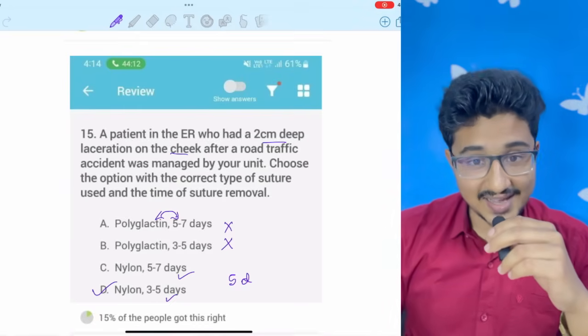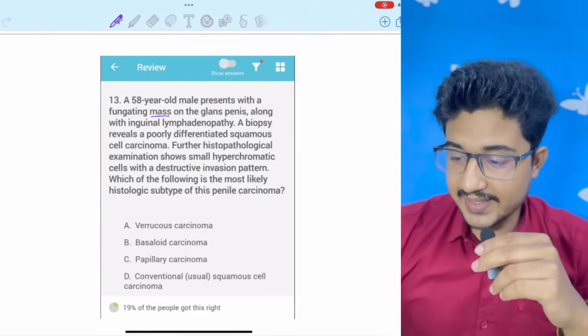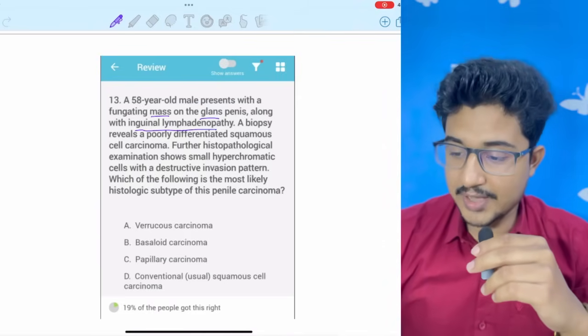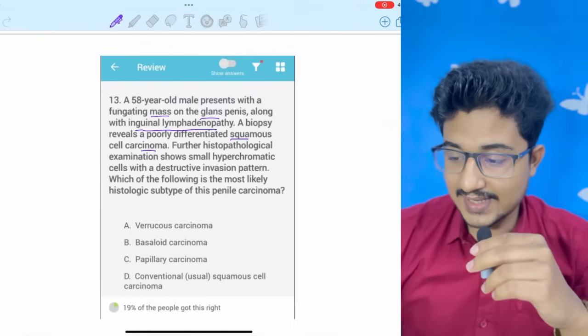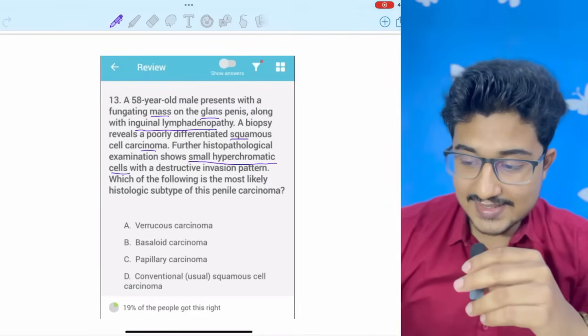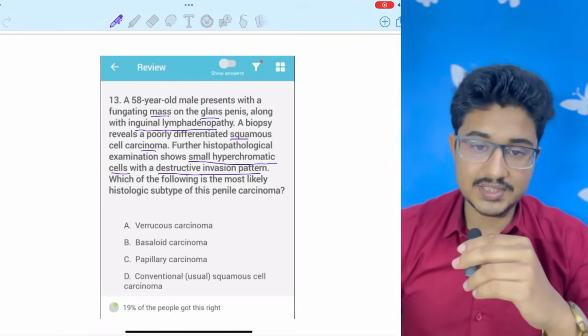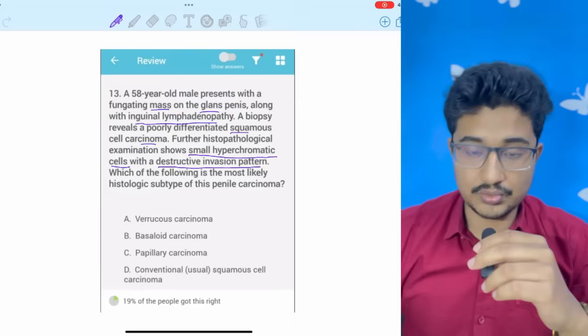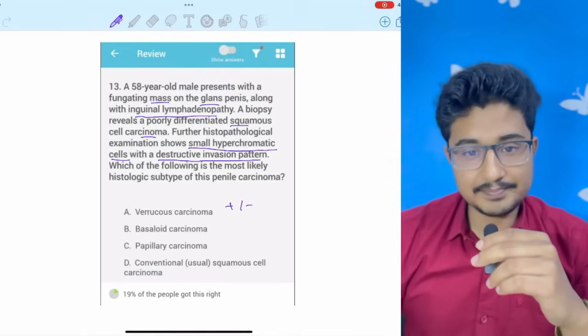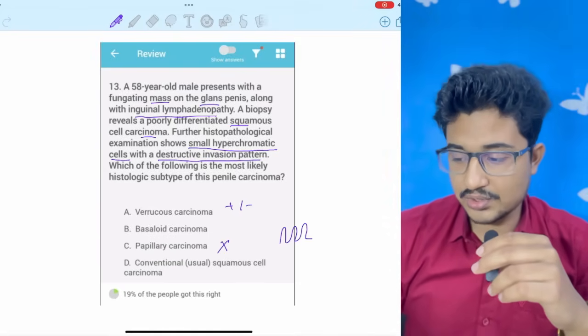Next question is a 58-year-old man presents with fungating mass on the glans penis along with inguinal lymphadenopathy. Probably a case of penile cancer. A biopsy reveals a poorly differentiated squamous cell cancer. Further, histological examination shows small hyperchromatic cells with destructive invasive pattern. Which of the following is the histological subtype? Let's see the options because I don't know the answer. Verrucous carcinoma plus minus. I am not sure. Papillary carcinoma. Papilla means finger-like projections. In any papillary cancer, there will be finger-like projections. So, I am ruling out this one.